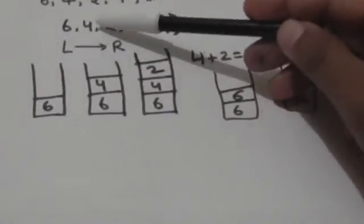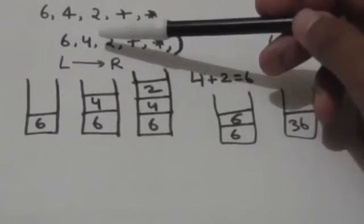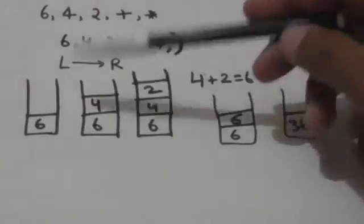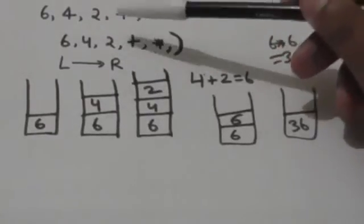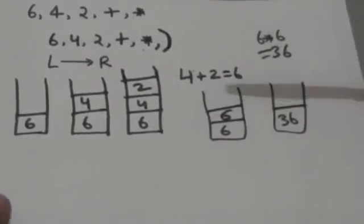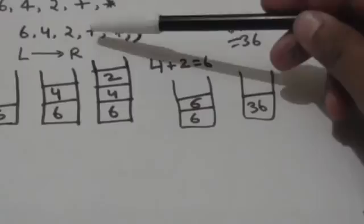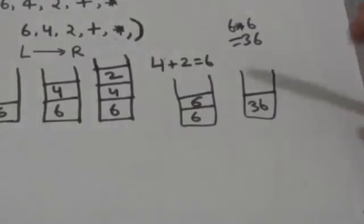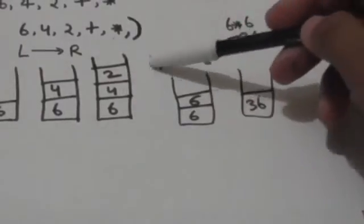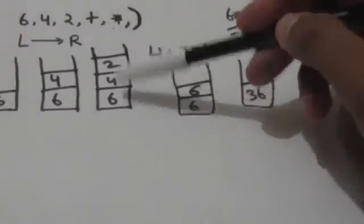Now scan it from left to right. The first element is 6 — it is an operand, so we will push it into the stack. The next element is 4, which is also an operand, so we push it into the stack. Next element is 4 — also an operand — push it into the stack. Then 2, also an operand, push 2 into the stack. The next element is the plus operator, so we remove the two top elements — 2 and 4 — and evaluate 4 + 2 = 6, and push 6 into the stack.